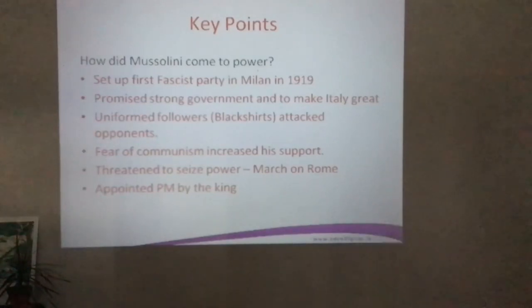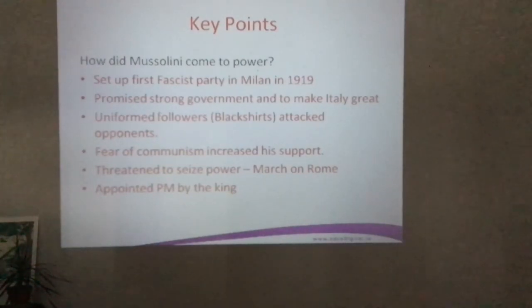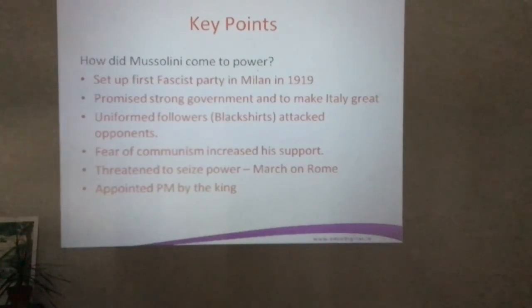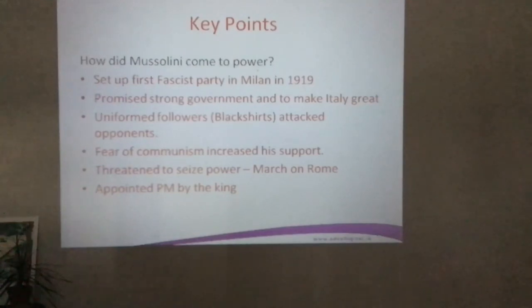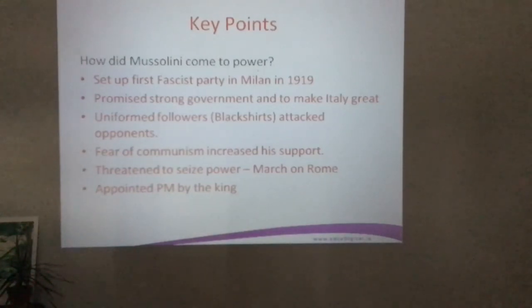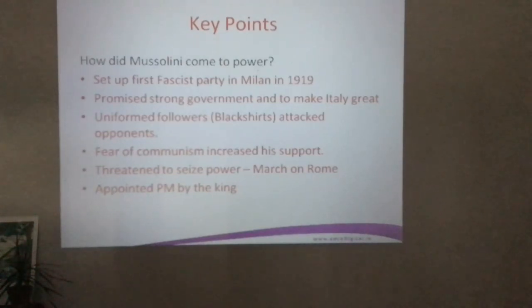Key points on how Mussolini came to power: he set up the first Fascist Party in Milan in 1919, promised strong government and to make Italy great again, his uniformed followers the Blackshirts attacked opponents like the journalist Matteotti, the fear of communism increased his support, he threatened to seize power on the March on Rome, and was eventually appointed Prime Minister by the king.